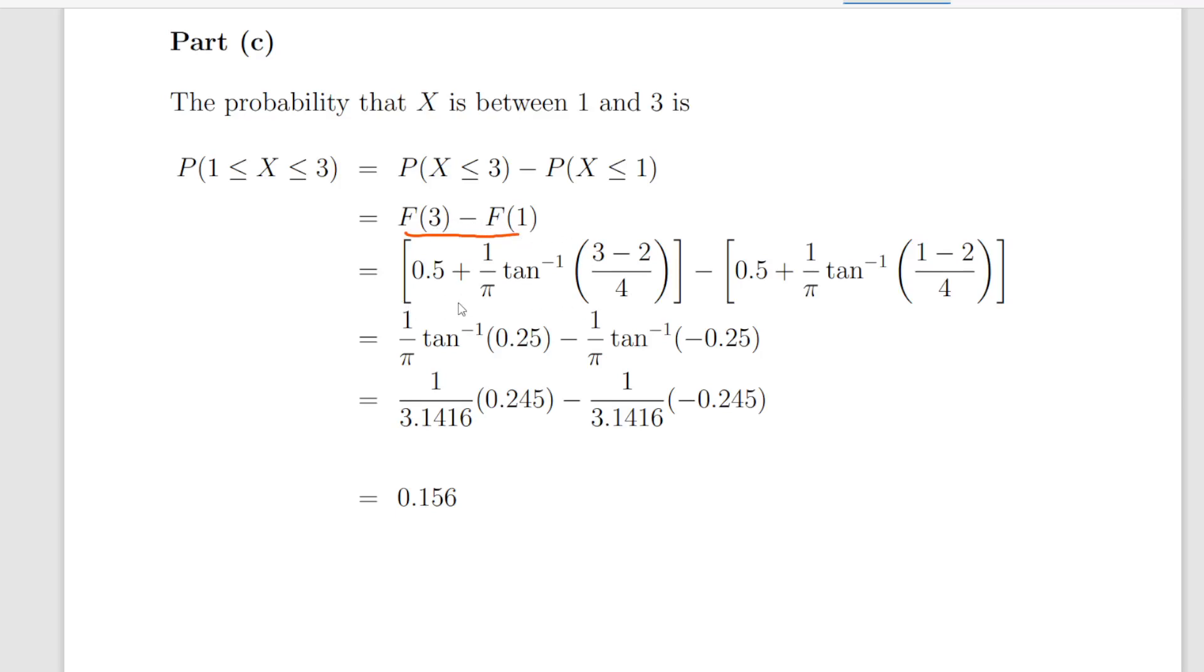So, we have two expressions there. Now, they cancel out. The 0.5s cancel out. And we have this expression here and this expression here. That's the key part there. So, we have tan to the minus 1 of 0.25 and tan to the minus 1 of minus 0.245. And a little bit of calculator work there. And we should get out 0.156.